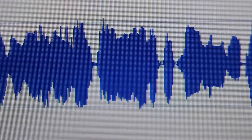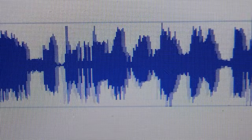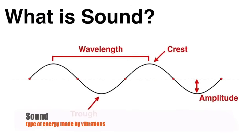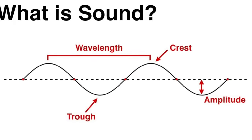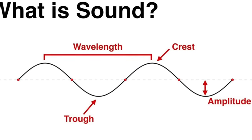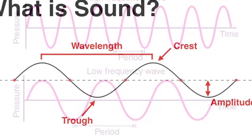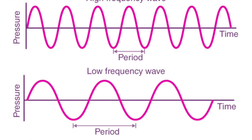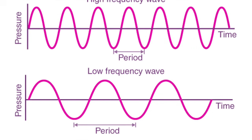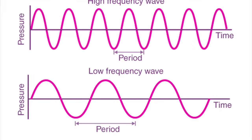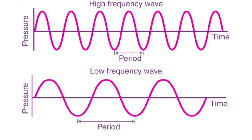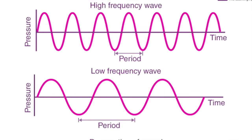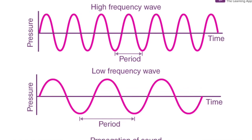Before we delve into the mechanics of a loudspeaker, it's essential to understand what sound is. Sound is a type of energy made by vibrations. When an object vibrates, it creates pressure waves in the air or any other medium around it. These pressure waves reach our ears and are interpreted by our brains as sound. A loudspeaker's primary job is to recreate these vibrations accurately based on an electrical signal.